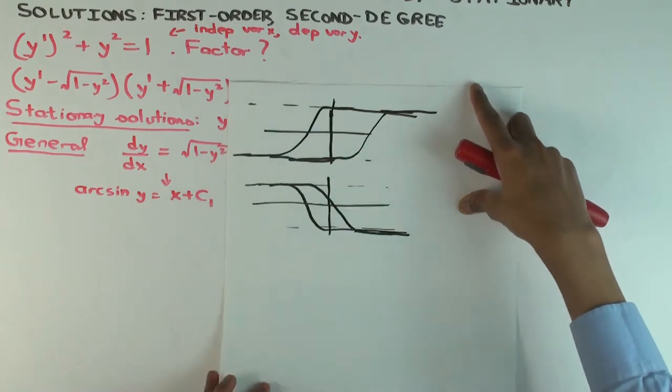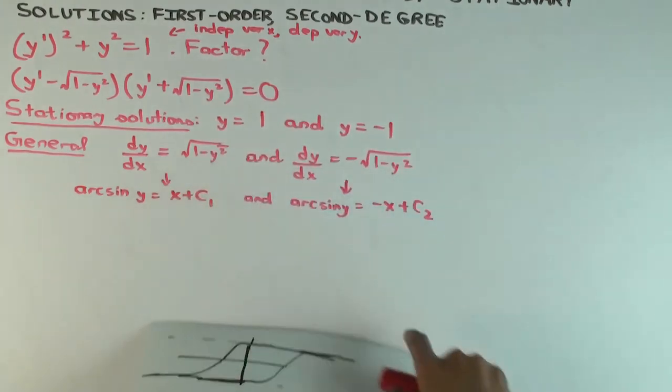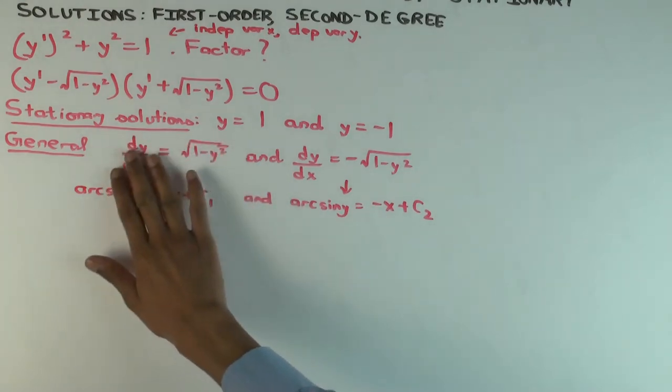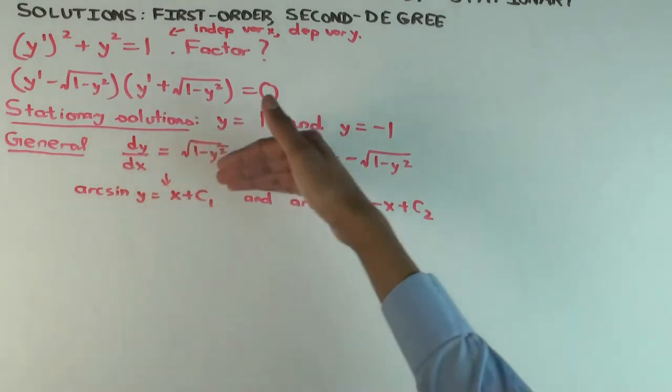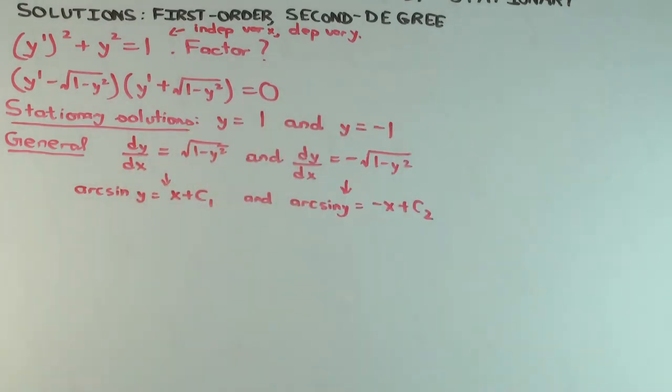That's what you would get if you were just trying to find solutions to these individually. But what I want to do now is find combined solutions. What I could do is be in this branch, then once I reach one, switch to the other branch.